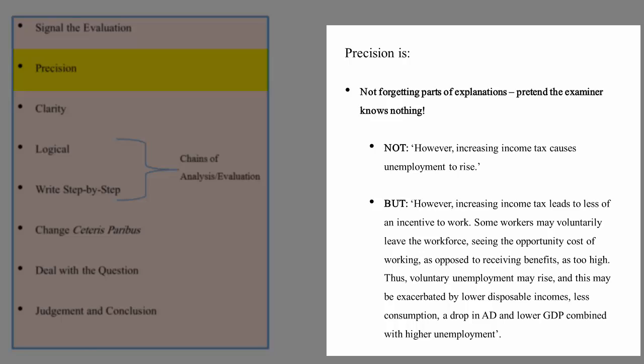If income tax goes up people will feel less incentivized to work. The opportunity cost of going out to work may be higher than just staying at home, and therefore unemployment may rise. This will be exacerbated by a secondary effect of falling disposable incomes, less consumption, less aggregate demand, lower GDP, and increased unemployment along with that. So you see the difference between the two, one is being very precise in how you're explaining things. It's the same technique as it was with analysis but from the other perspective this time.